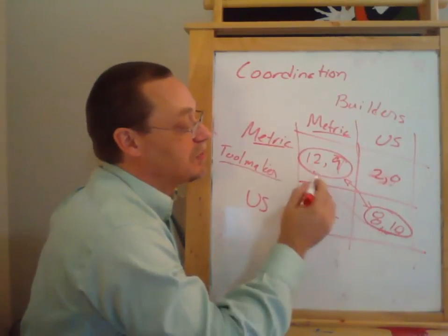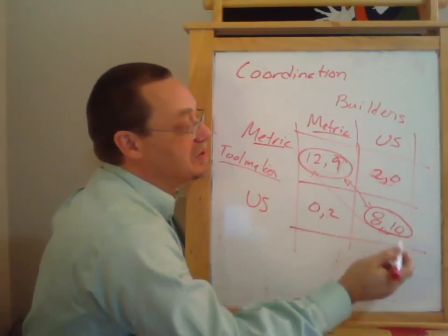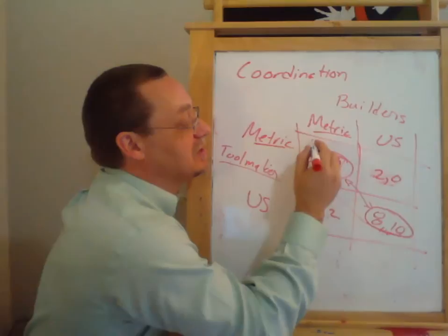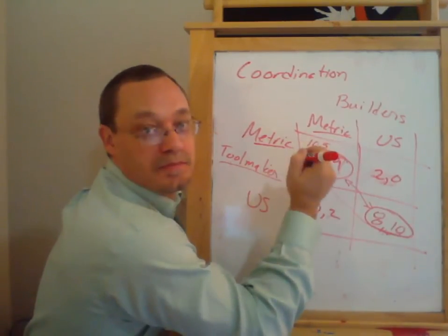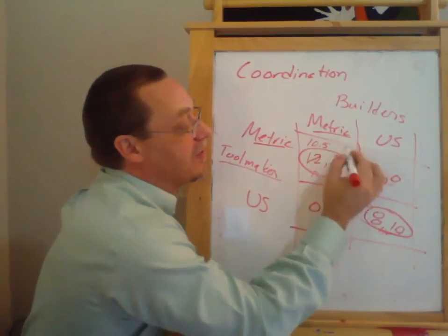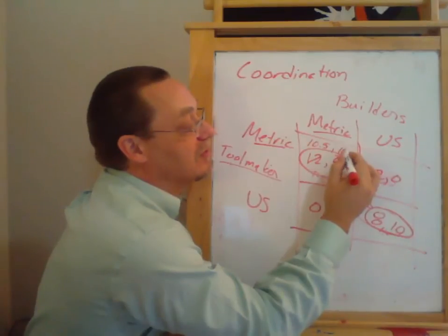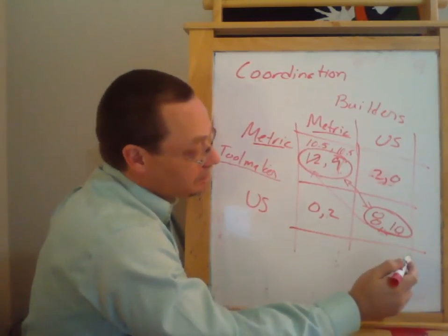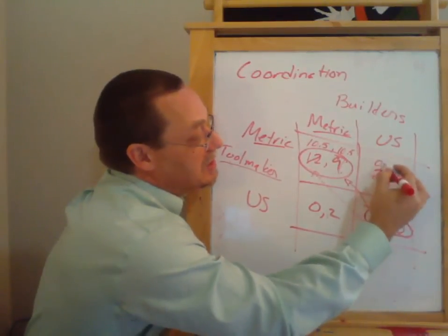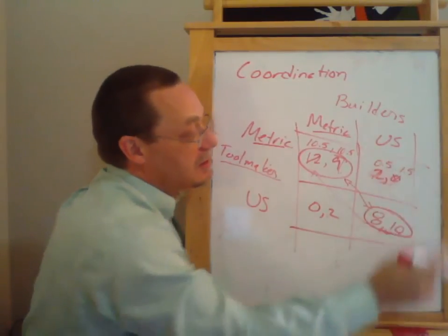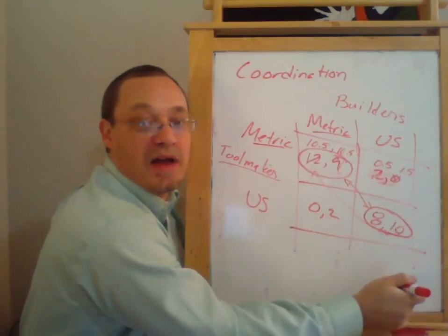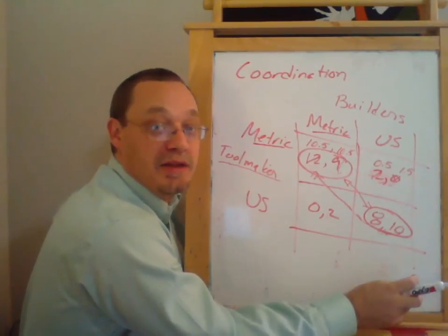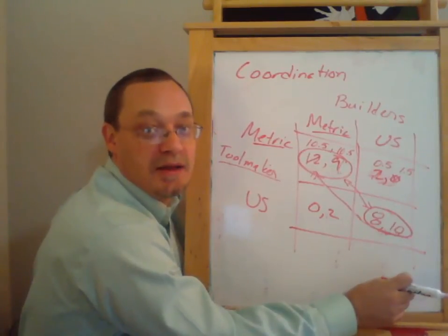You can imagine that the tool makers might say: because we're going to gain three as we make this switch, we're going to go ahead and compensate the builders. We're going to give them one and a half of our 12, so we take 10.5 and give them 1.5. That gives the builders 9 plus 1.5, which is 10.5, and now metric becomes the dominant strategy for the builders. So if you play metric, builders will receive 1.5. Switching from the inefficient equilibrium to the efficient equilibrium, you may have to compensate someone, but if it is more efficient, you'll create enough extra payoff to be able to compensate them. That's the idea of a coordination game.